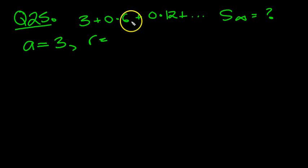And then again, to go from 0.6 to 0.12 you times by a fifth. So r is one fifth, or 0.2. So that's that.